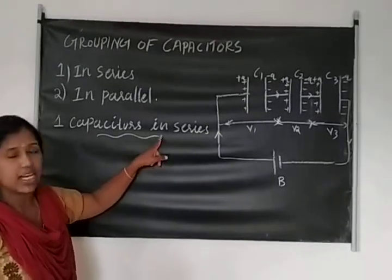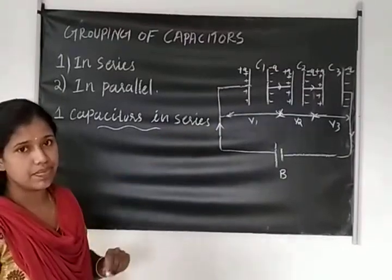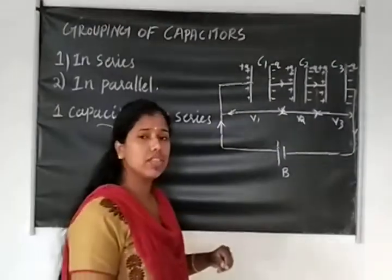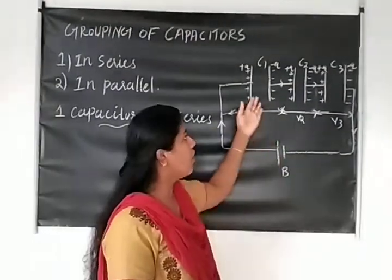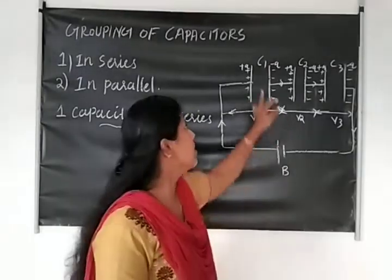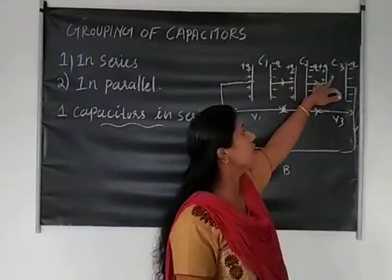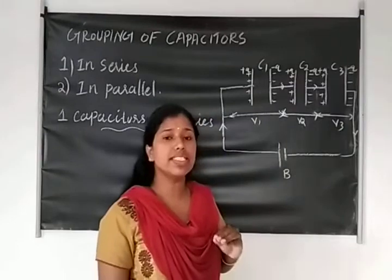First I would like to explain capacitors connected in series. I have drawn here three capacitors — C1, C2, C3 — connected in series.